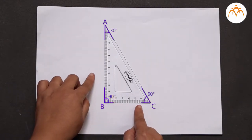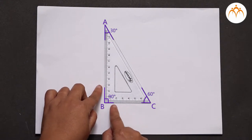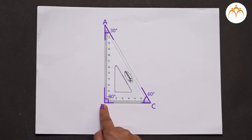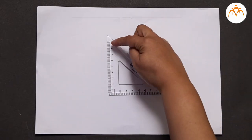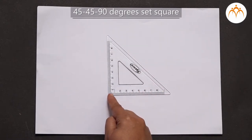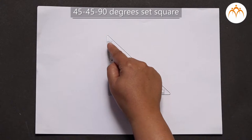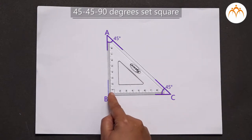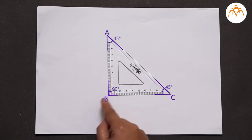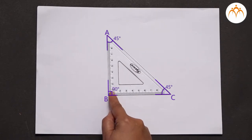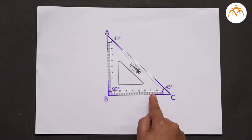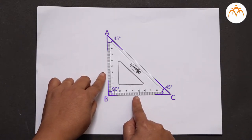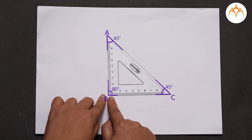these two edges of the set square are perpendicular to each other at this point. Similarly, this set square is called a 45-45-90 degrees set square because it has this angle equal to 45 degrees, this angle equal to 45 degrees, and this angle equal to 90 degrees. Again, as this angle is equal to 90 degrees, these two edges of the set square are perpendicular to each other at this point.